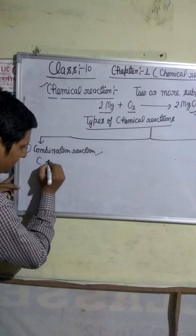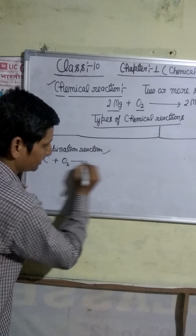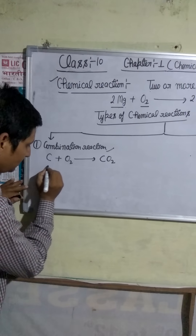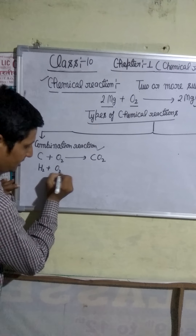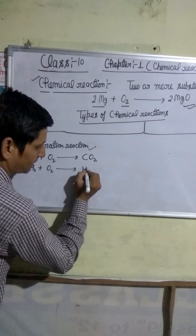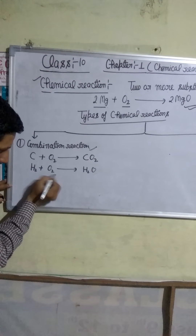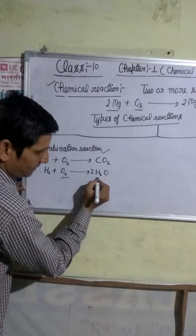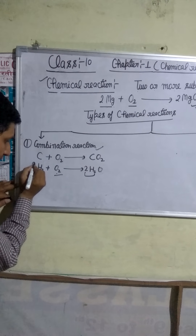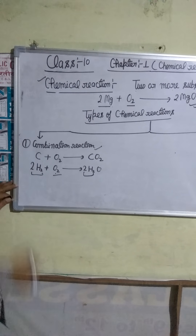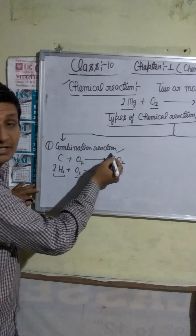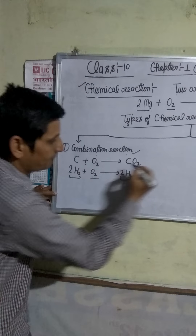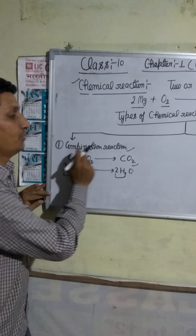First substance carbon, second substance oxygen — these two substances combine to form the single substance carbon dioxide. Another example: hydrogen combined with oxygen to form water. Those reactions in which two or more substances combine and form a single substance is called a combination reaction.